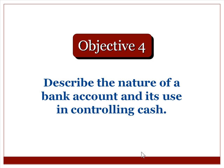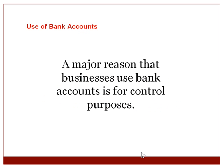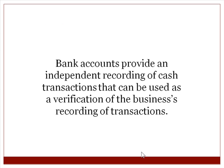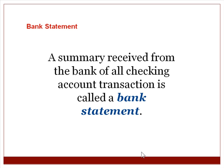The fourth objective is to describe the nature of the bank account and its use in controlling cash. The major reason businesses use bank accounts is to control cash — this is where auditors look to trace where cash came from, where it went, and the balance at the end of a period, which is the cash control account on your books. Companies often have multiple accounts such as a payroll bank account and a general bank account. Bank accounts provide an independent recording of cash transactions that can verify the business's own recording.